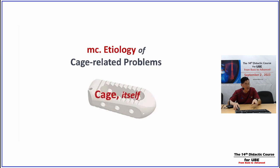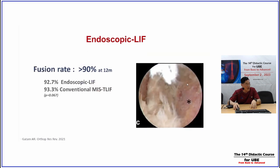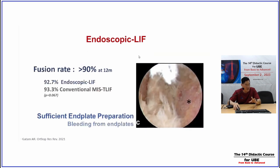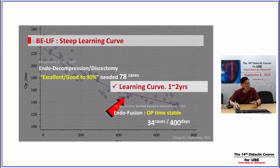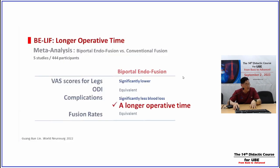The most common etiology of cage-related TLIF failure is the cage itself. The endoscopic TLIF fusion rate appears very nice — end plate preparation, bone graft, everything looks okay. But the technique is difficult. For decompression alone, you need more than 100 cases of experience. For fusion, you need more than 70 cases, and patients from years one to three will be visiting you while you are still on the learning curve. The operating time is also much longer than open TLIF.